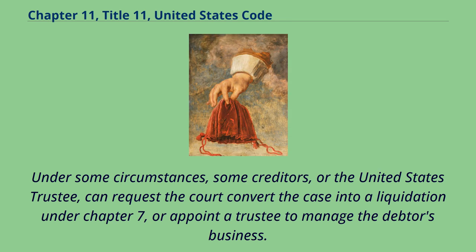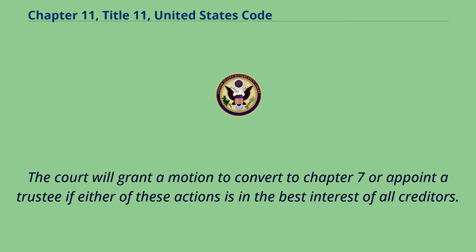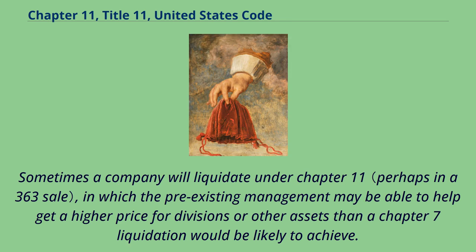Under some circumstances, some creditors or the United States trustee can request the court convert the case into a liquidation under Chapter 7, or appoint a trustee to manage the debtor's business. The court will grant a motion to convert to Chapter 7 or appoint a trustee if either of these actions is in the best interest of all creditors. Sometimes a company will liquidate under Chapter 11, where pre-existing management may be able to help achieve a higher price for divisions or assets than a Chapter 7 liquidation would likely achieve.